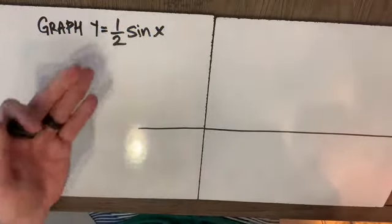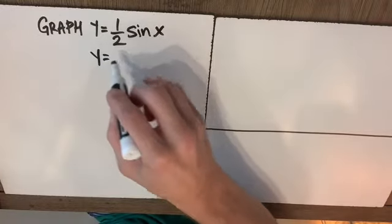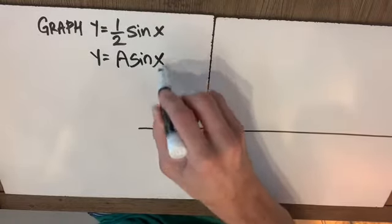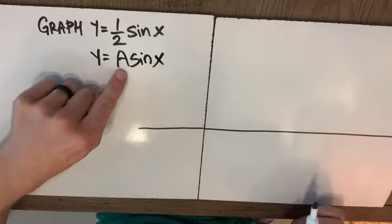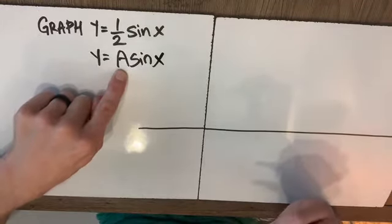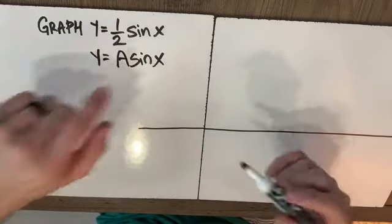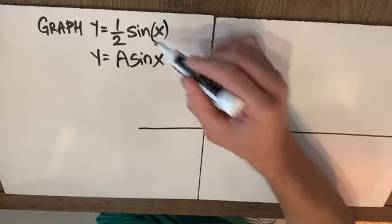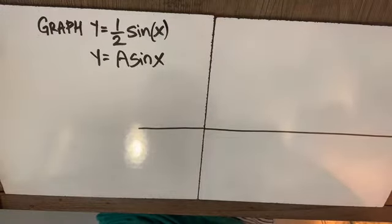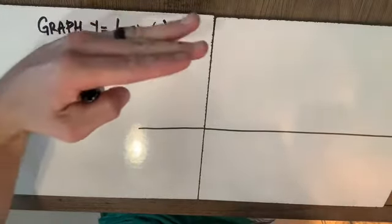If we're asked to graph y equals 1/2 sine x, notice this is in the form y equals a sine x. So our amplitude is 1/2. That's going to represent a vertical shrink by a factor of 1/2. It's going to affect the y because it's on the outside of our function. It's not on the inside of these parentheses affecting the x. So anything on the outside I know affects the y and it's very straightforward. A 1/2 means wherever we had a 1 it will be shrunk down to 1/2.